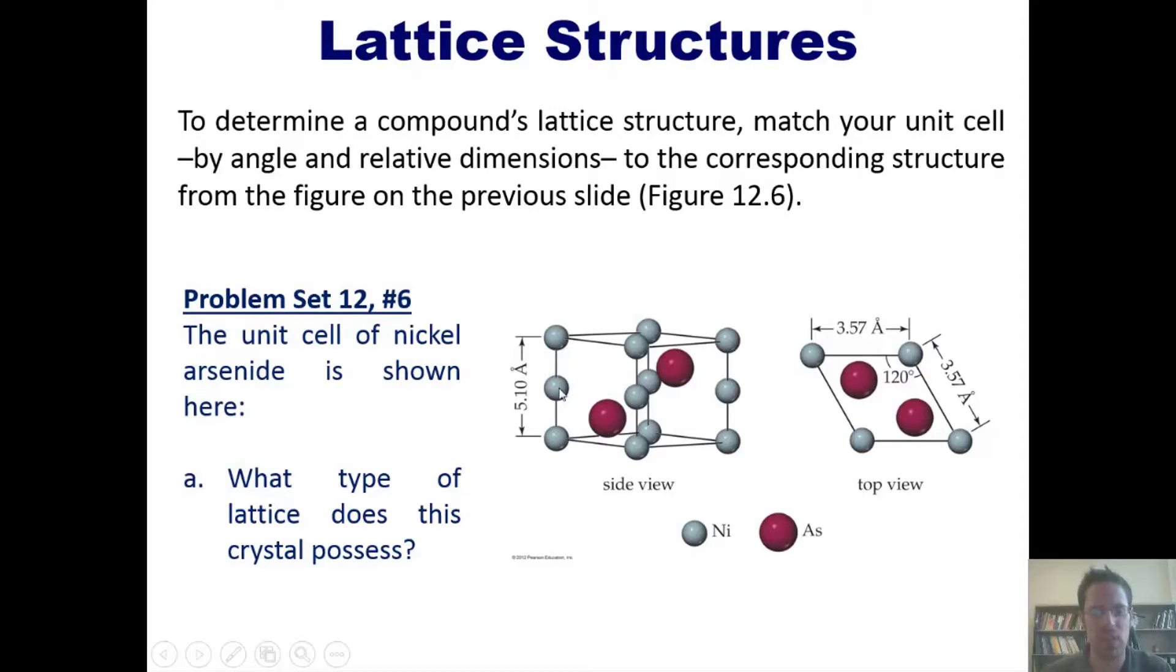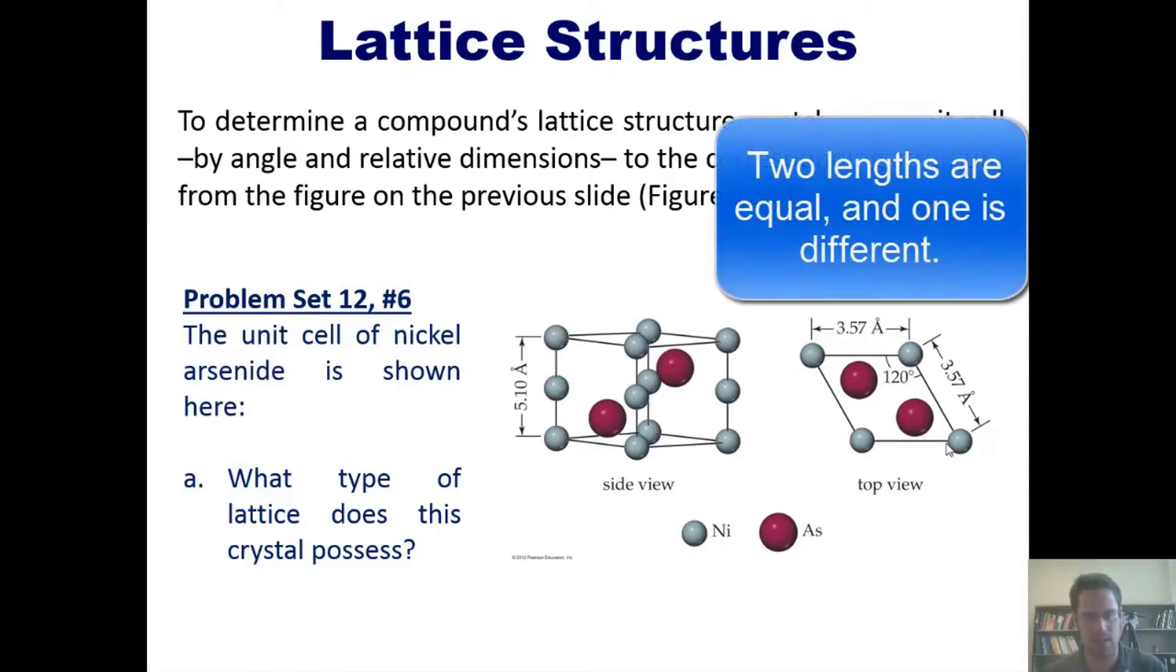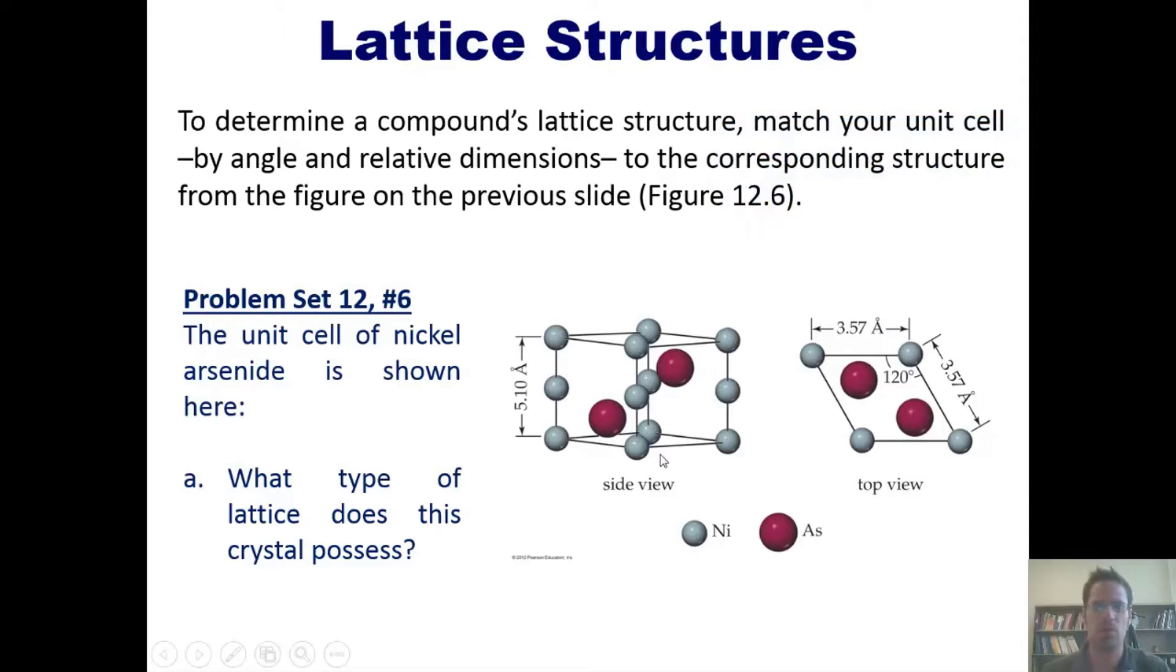As we examine them closely, we'll notice that the length of the unit cell is 5.10 angstroms, whereas the lengths of the upper rhombus are 3.57 and 3.57 angstroms. In other words, I've got a unit cell that has two lengths that are identical and a third length that is different. Keep that in mind.